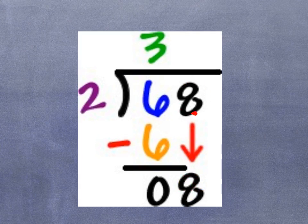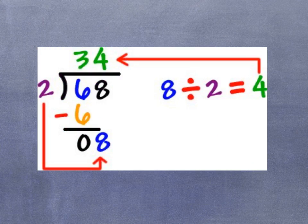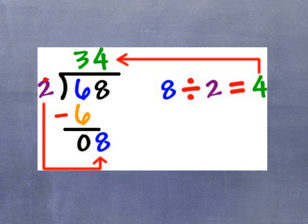Next I need to bring down my next number, 8. Then I repeat the process with 8. 8 divided by 2 equals 4.